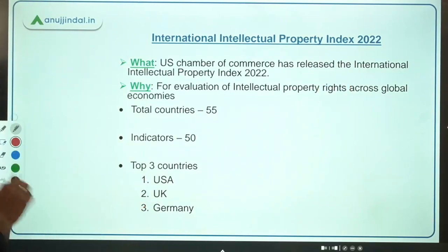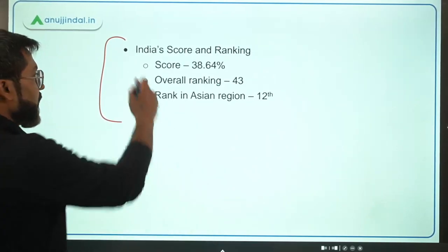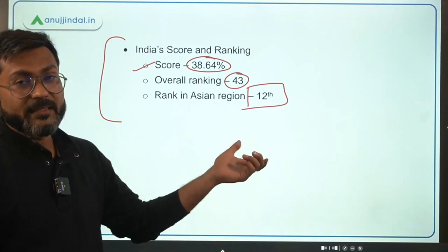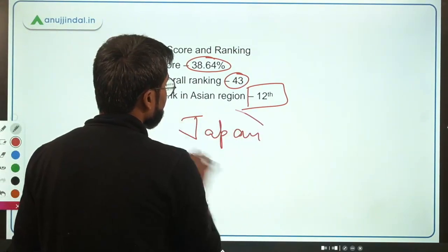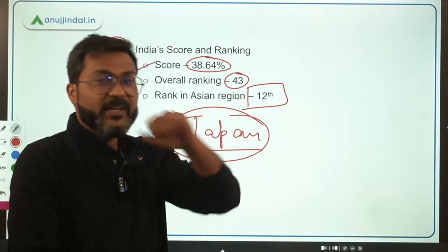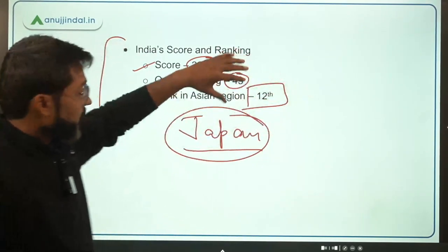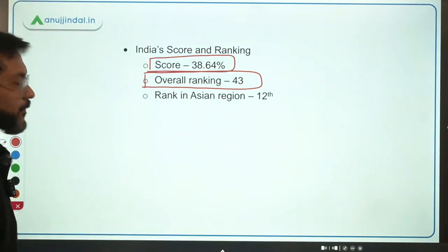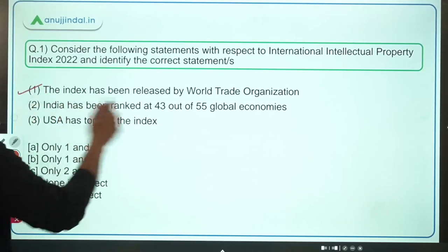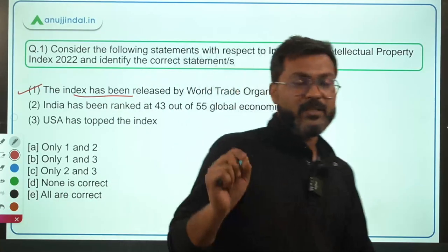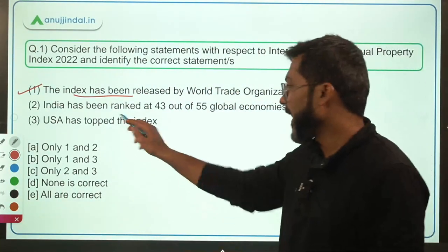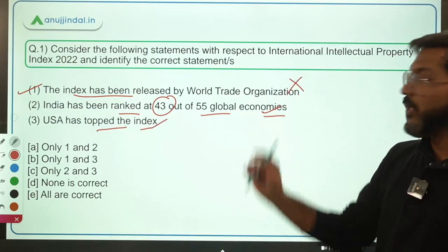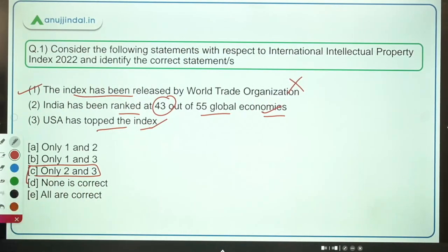India's score in this index is 38.64 percent and the overall ranking is 43 out of 55 countries. Among all Asian countries, Japan is ranked number one while India is at rank 12 among Asian countries. Overall ranking of 43 is very important to remember along with the score of 38.64 percent. Coming back to the question: the index was released by US Chamber of Commerce, not the WTO. India is ranked 43 out of 55, and USA topped the index — so statements 2 and 3 are correct. Option C is the correct answer.